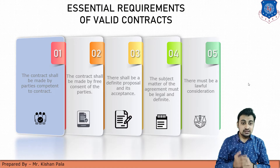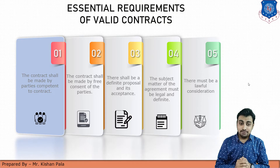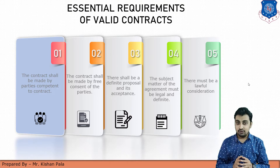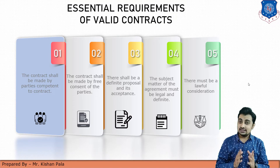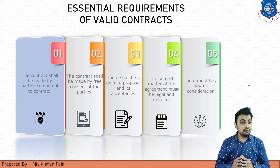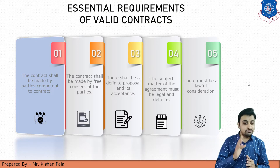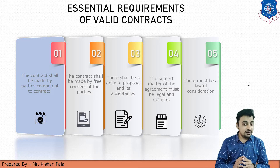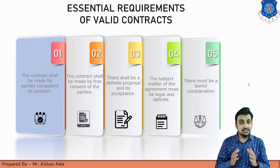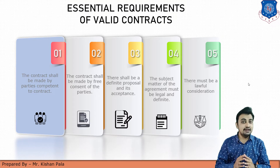Let us understand the essential requirements of valid contracts. First, the contract shall be made by parties competent to the contract. Second, the contract shall be made by free consent of the parties. Third, there shall be a definite proposal and its acceptance. Fourth, the subject matter of the agreement must be legal and definite. And last, there must be lawful consideration.